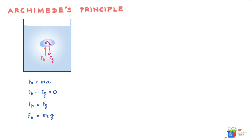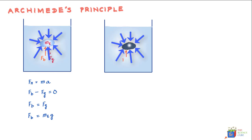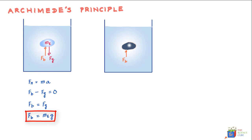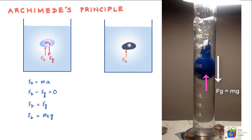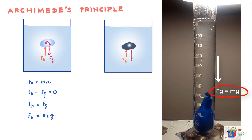Now imagine that we replace the liquid inside the sack with iron, keeping the shape of the body unchanged. There is still a buoyant force acting on this body, and it remains equal to FB. However, the sack of iron is going to sink, which means the force of gravity acting downward is greater than the buoyant force.